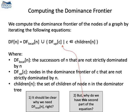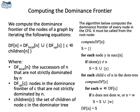We can compute the dominance frontier using equations. df(n) is the dominance frontier of a node n. df_local gives us the successors of n that n does not dominate — they are in the dominance frontier. df_up gives us the dominance frontier of nodes dominated by n, as long as n does not strictly dominate those other nodes. I suggest you stop the video and try to find a relation between the equation on the left side and the imperative algorithm on the right side of the figure.